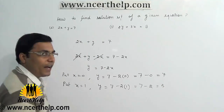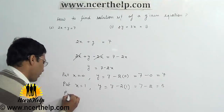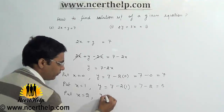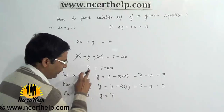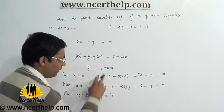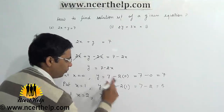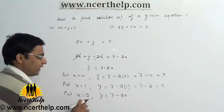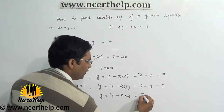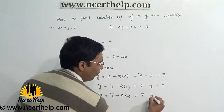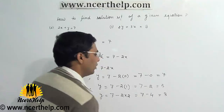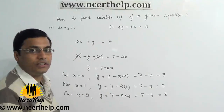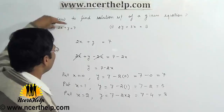My value of y is 5. Next, put x equals 2: y equals 7 minus 2 times 2, which is 7 minus 4, so y equals 3. So these are the three solution sets of this given equation.